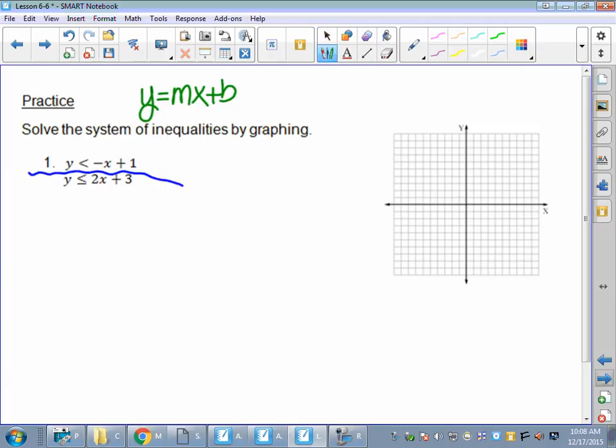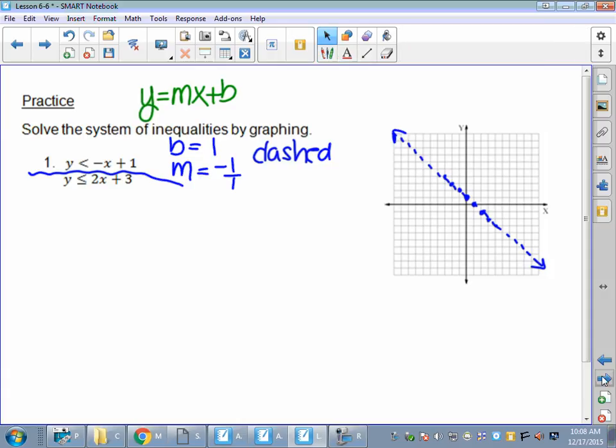So for the first problem, there's three things that I always look for. One is the y-intercept, which is 1. One is the slope, which in this case is negative 1, or negative one over one if you like that fraction. And then should we use a dashed or a solid line? I'm going for dashed because it doesn't have the or equal to.